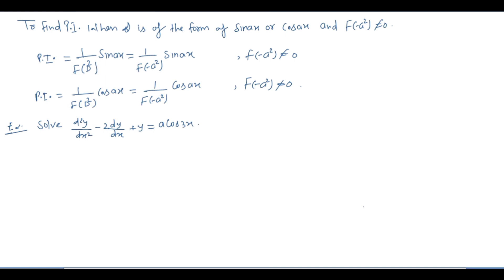Welcome to our channel of Brinks classes. Today's topic is to find the particular integral when Q is of the form sin(ax) or cos(ax), with the condition that f(-a²) is not equal to 0.